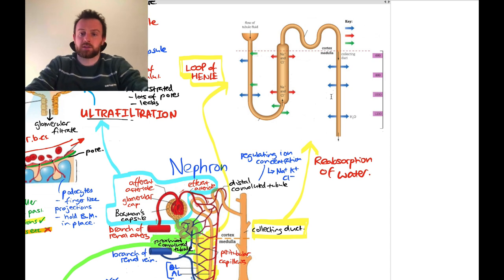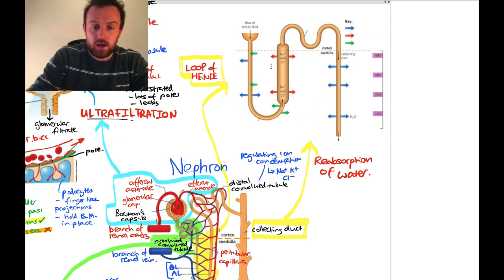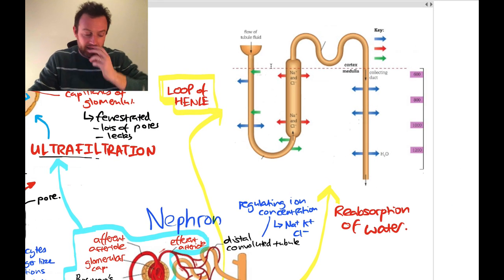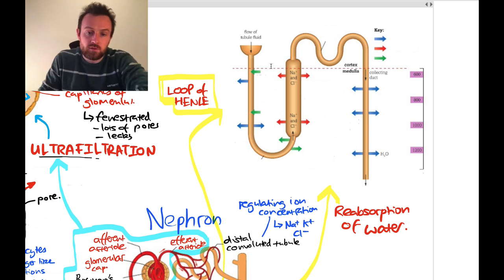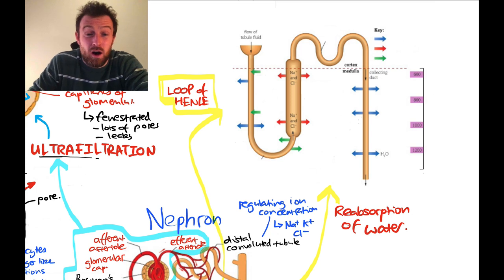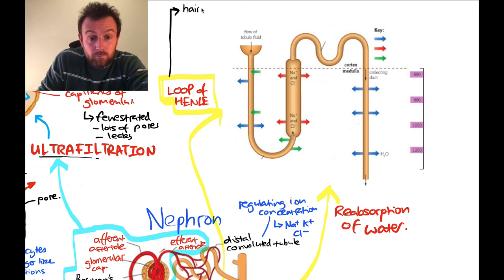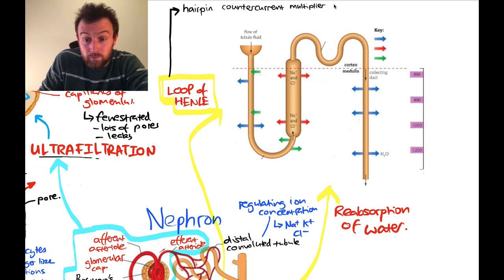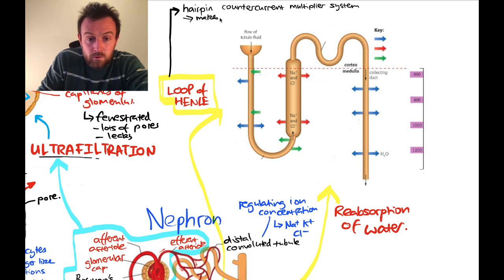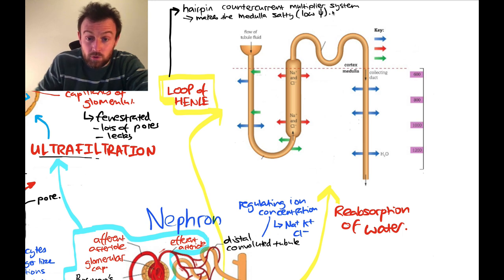The loop of Henle is a bit confusing. It is a hairpin counter-current multiplier system. What it does is make the kidney medulla very salty — with a low water potential. Let's look at the color codes: blue arrows refer to osmosis (passive movement of water), red refers to active transport (using energy), and green refers to diffusion (passive transport down a concentration gradient).